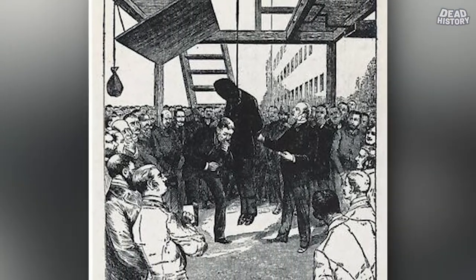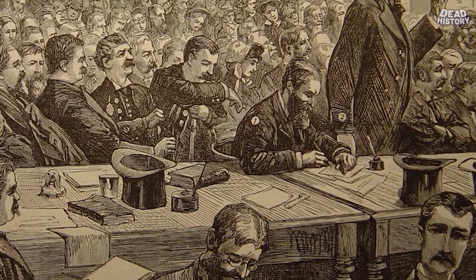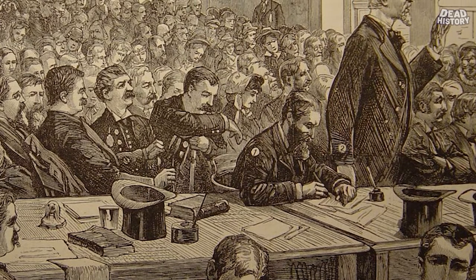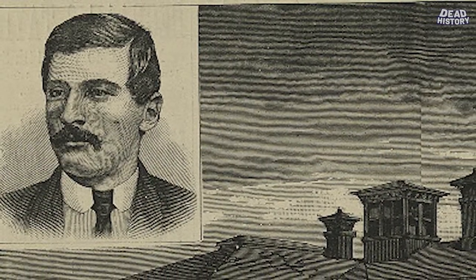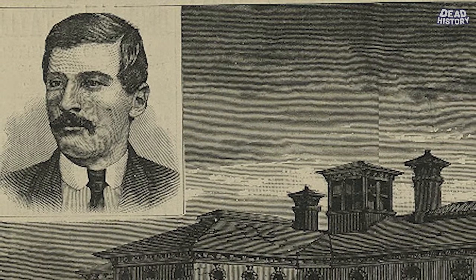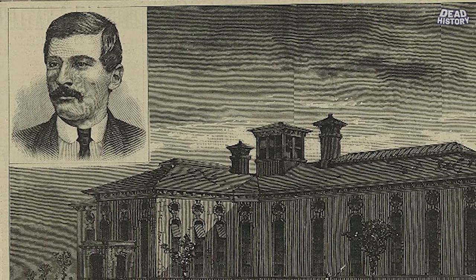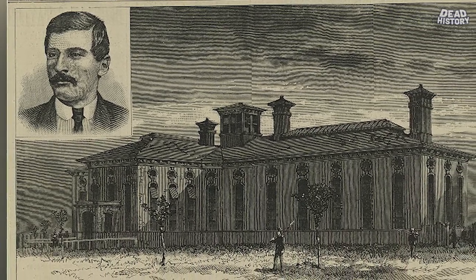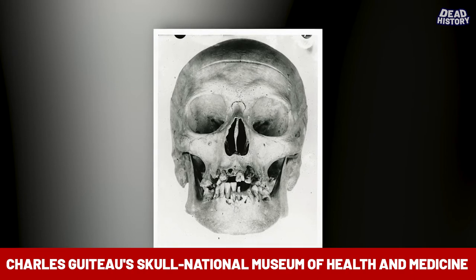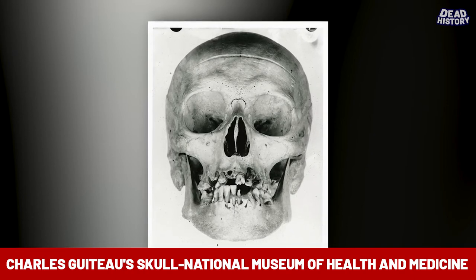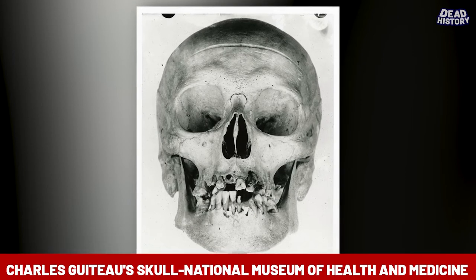Within a day of the attack, a dozen physicians examined Garfield's back but none could determine the location or trajectory of the bullet. Dr. D.W. Bliss, an acquaintance of the president who had lost his practice, assumed control and barred other medical professionals from seeing the patient. Bliss was wary of emerging theories about bacteria and probed Garfield's wound without washing his hands or instruments. Guiteau was captured immediately after the shooting and was executed by hanging on June 30th, 1882.